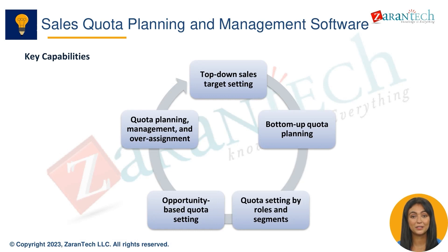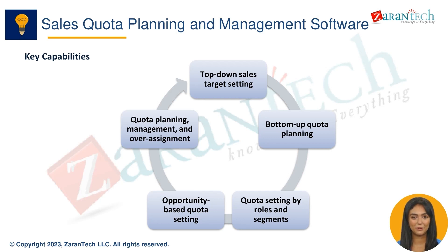The key capabilities of Workday Adaptive Planning for sales quota planning and management include: first, top-down sales target setting driven by revenue goals; second, bottom-up quota planning by overlaying sales opportunity data on top of goals; third, setting quotas by sales roles, regions, products, and other dimensions; fourth, directly linking quotas to sales opportunity data; and fifth, optimized quota planning management and over-assignment handling.